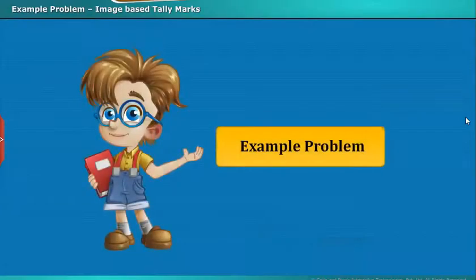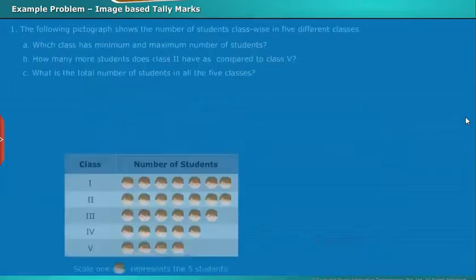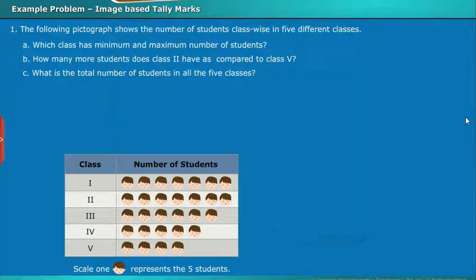Let us have a look on some example problems. The following pictograph shows the number of students class-wise in 5 different classes. Here scale 1 image represents the 5 students. Which class has minimum and maximum number of students? How many more students does class 2 have as compared to class 5? What is the total number of students in all the 5 classes?